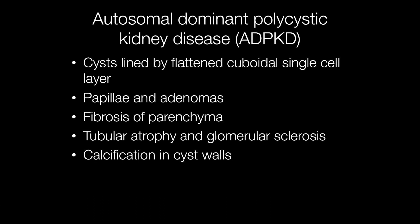Histological features of autosomal dominant polycystic kidney disease include cysts lined by flattened cuboidal cells in a single cell layer. There may be papillae and adenomas developing. The parenchyma shows fibrosis with atrophy of tubules and sclerosis of glomeruli, and the cyst walls may become calcified.